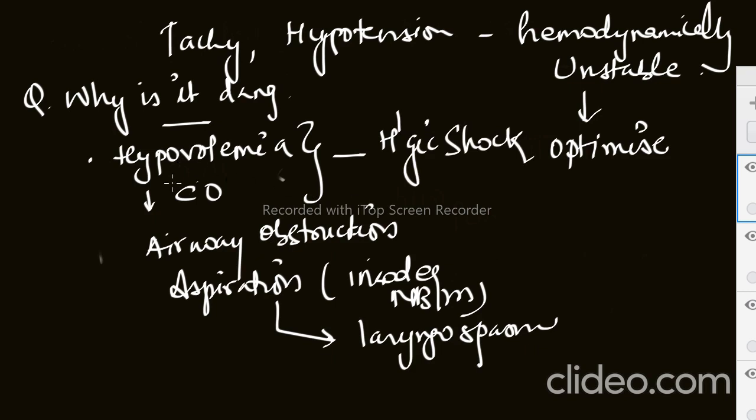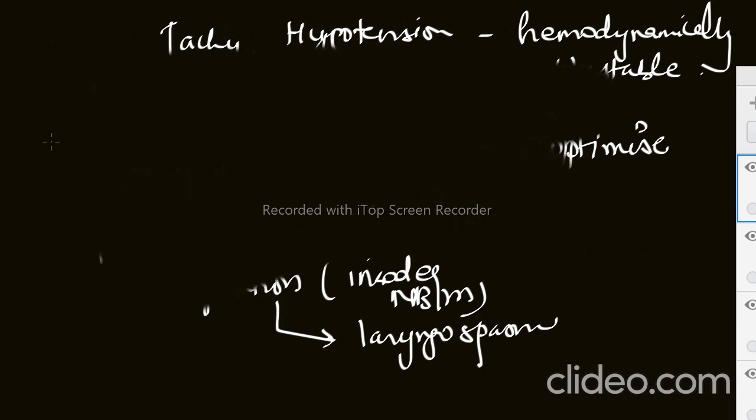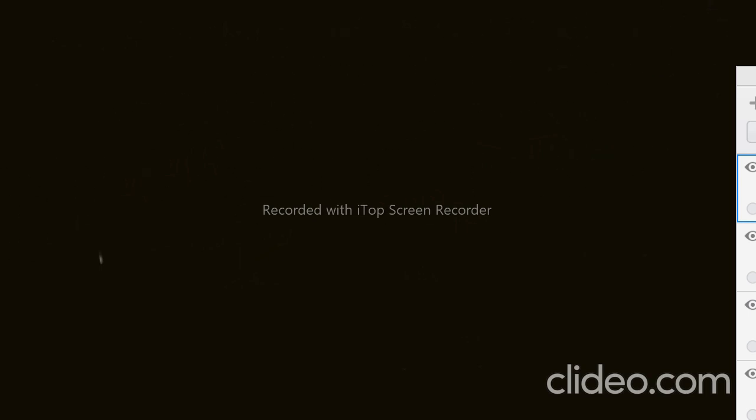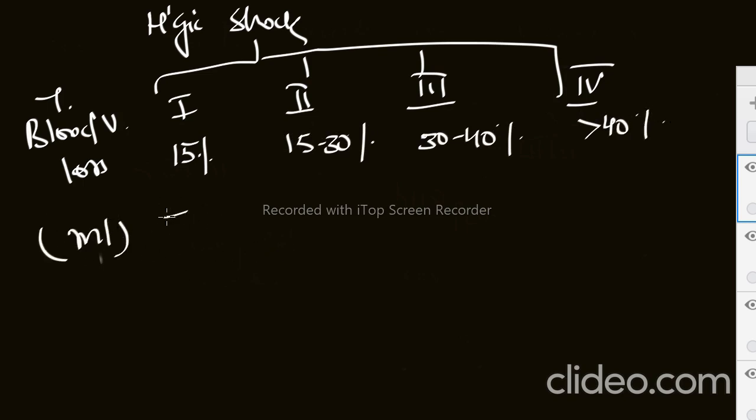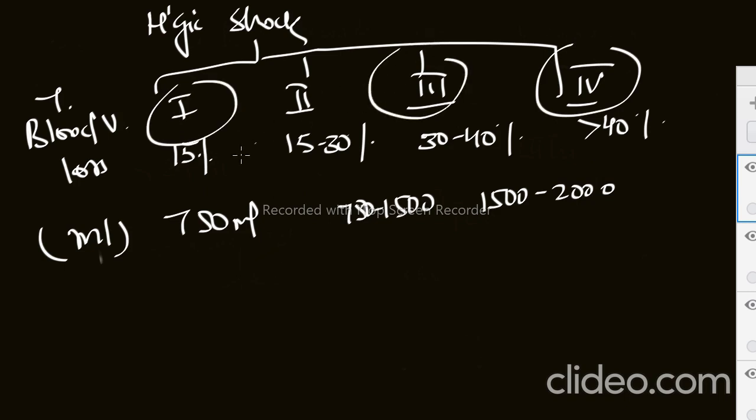They can ask what are the complications related to it and about hemorrhagic shock. Hemorrhagic shock is divided into four classes according to total blood volume loss: first, second, third, and fourth. First is if the loss is around 15%, second is 15 to 30%, 30 to 40%, and more than 40%. If they ask in ml: around 750 ml in first class, 715 to 1500, then 1500 to 2000. Accordingly we can see whether the patient is in severe shock or class one, class three shock, etc.